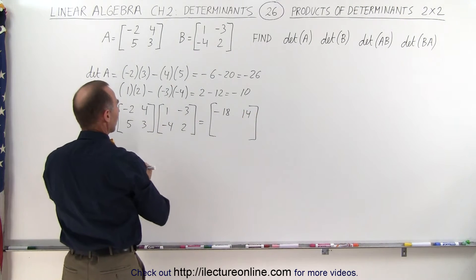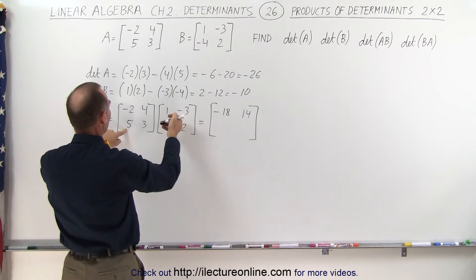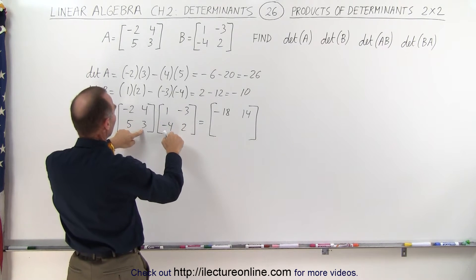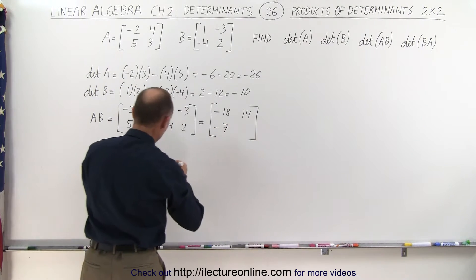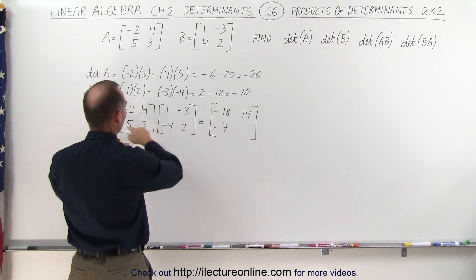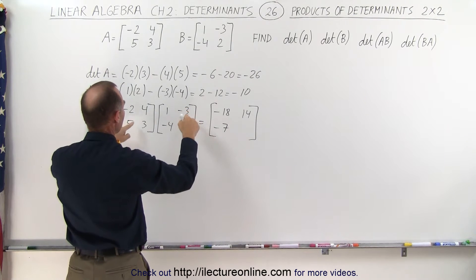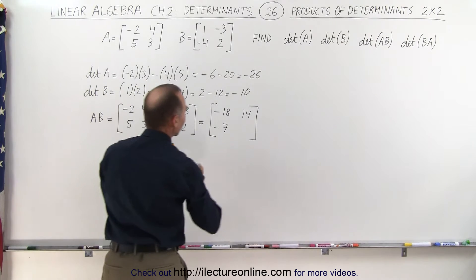For the third element, we multiply the second row by the first column: 5 times 1 is 5, plus 3 times negative 4 is minus 12, so 5 minus 12 gives minus 7. And finally, the fourth element: 5 times negative 3 is minus 15, plus 3 times 2 is 6, giving minus 9.